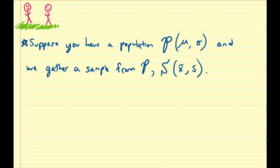Let's assume we have some population P with mean μ and standard deviation σ, and we gather a sample of size n from it with sample mean x̄ and standard deviation s. So what do we know?